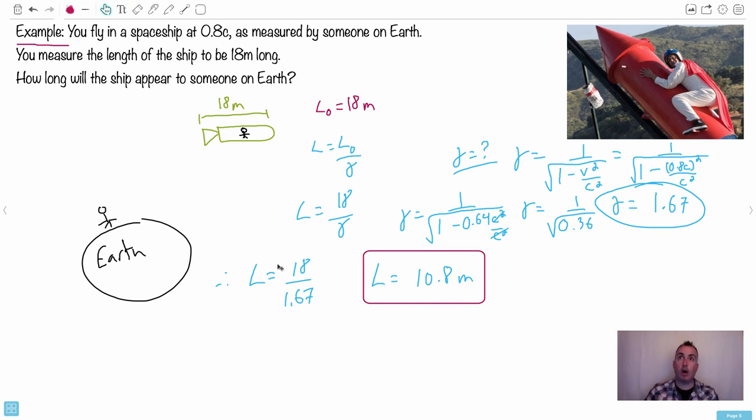See that? So someone who's watching you on Earth, they could take measurements remotely, they can measure how long you appear to be. They can do that by knowing your distance and by knowing your size, your apparent size, they can work out the trigonometry and figure out, ah, you must be 10.8 meters long. When actually, if you stopped your spaceship and go, hi, come measure my ship. It's like, oh, that's weird. It's 18 meters long.